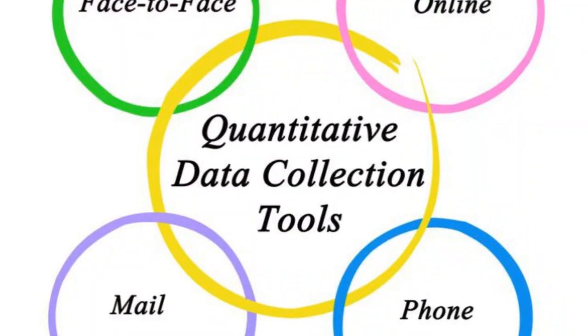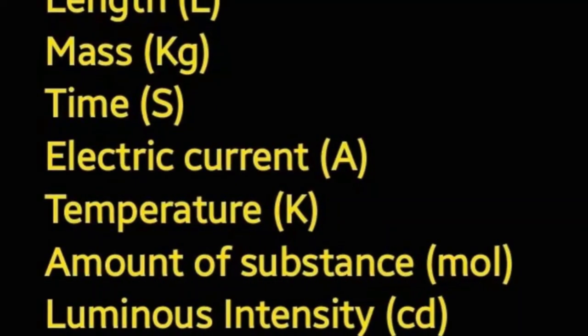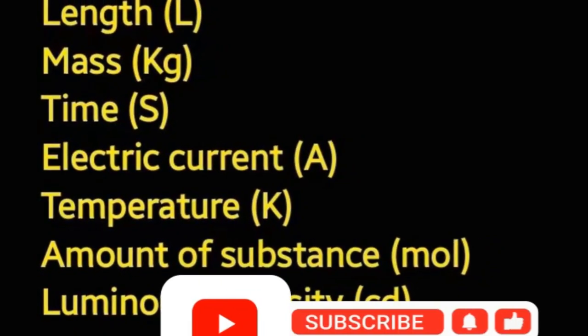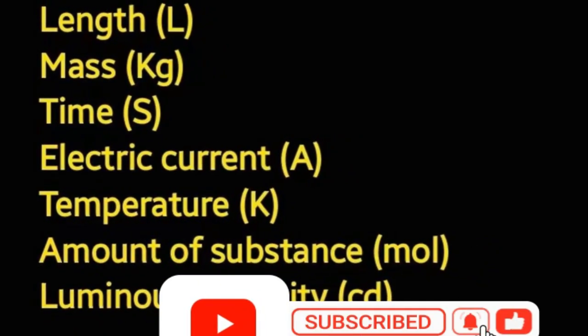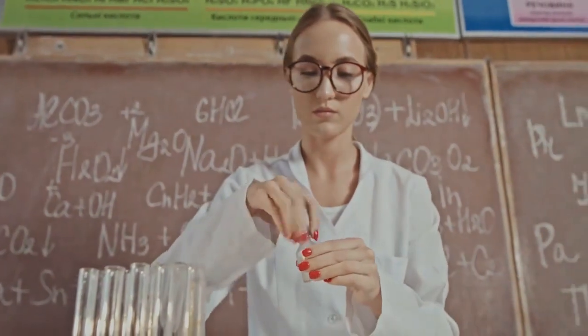These are attributes or properties of material and radiation that can be quantified. They're broken down into seven base quantities: length, mass, time, electric current, temperature, amount of substance, and luminous intensity. Each plays a crucial role in our daily lives and scientific endeavors.